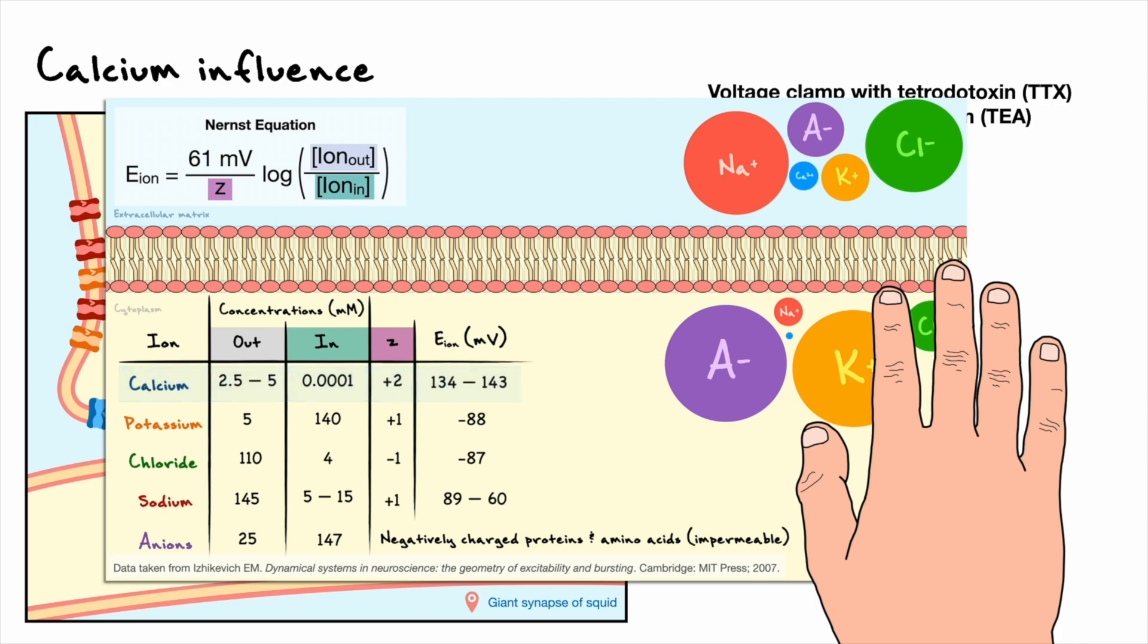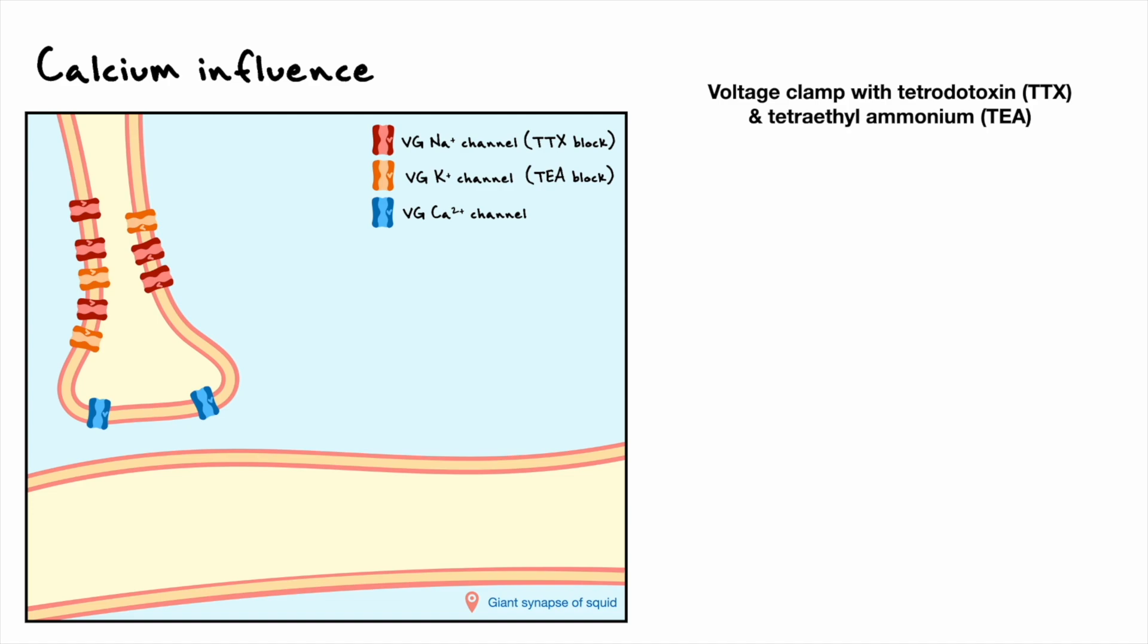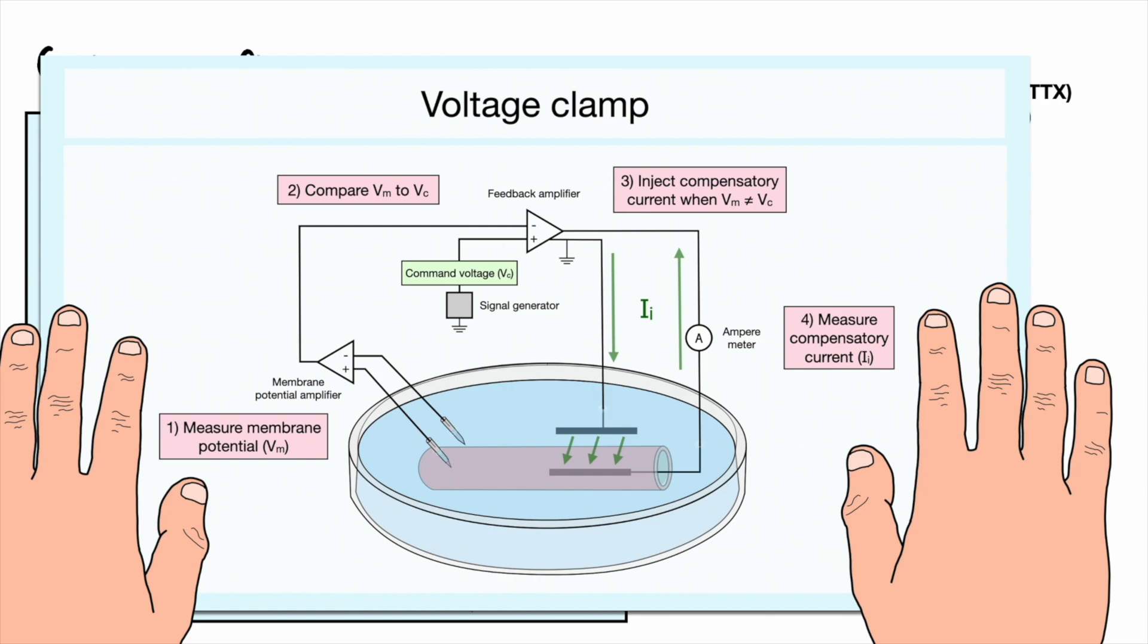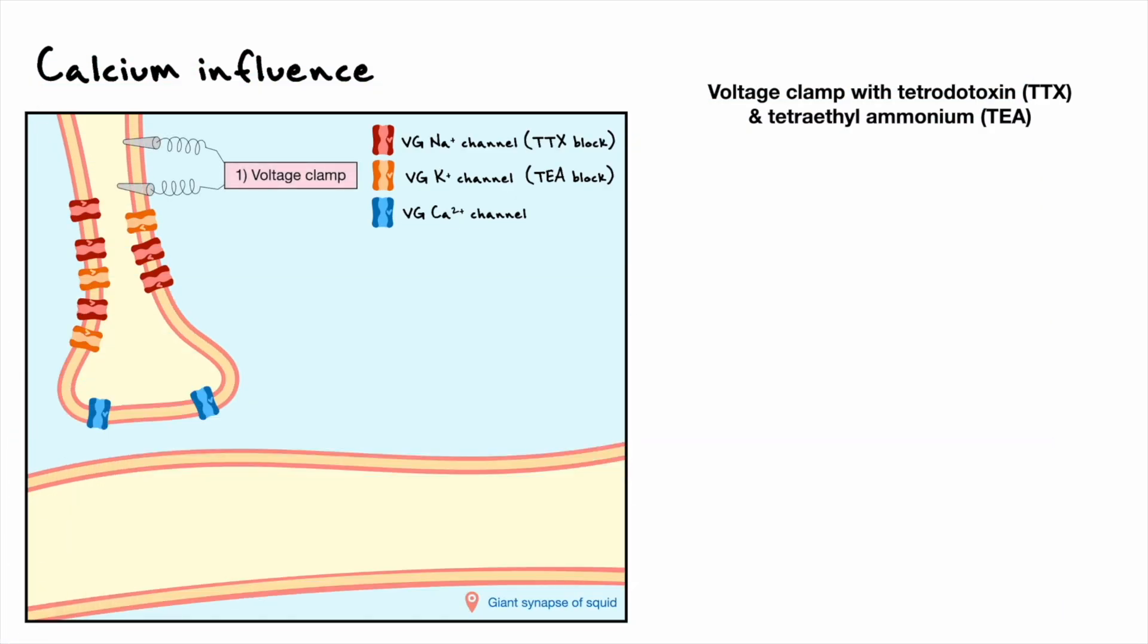The conclusive proof that calcium was the signal for transmitter release came from experiments made by Rodolfo Linus and his colleagues which utilized the voltage clamp technique. Remember that the purpose of the voltage clamp is to lock the cell at the command voltage and send a compensatory current that maintains the command voltage. The compensatory current is a direct measure of how the cell reacts to the change in membrane potential. Linus and his team voltage clamped the presynaptic neuron and applied the same pharmacological blockers to prevent any sodium or potassium current from flowing such that it isolates the calcium current.